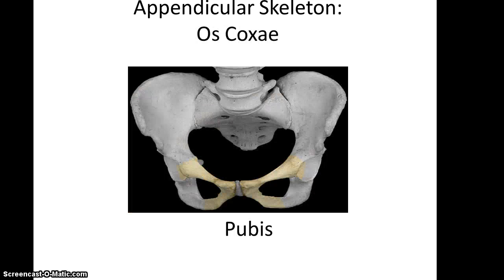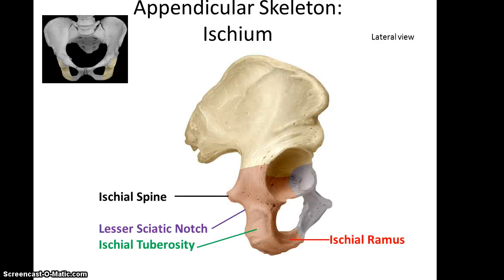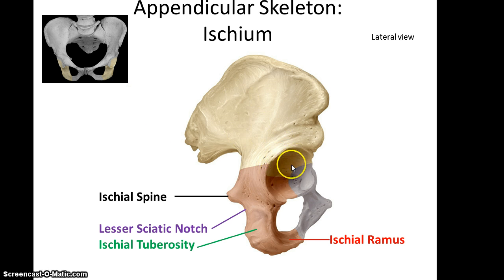Before moving on, note that the acetabulum — this socket — is actually composed of a fusion of all three of the hip bones. So it has an ilium portion, an ischium portion, and a pubis portion.